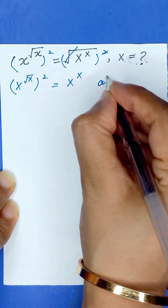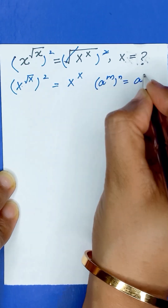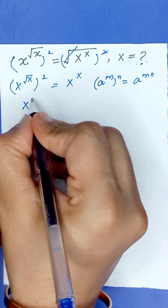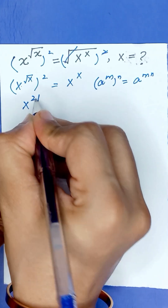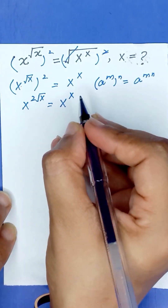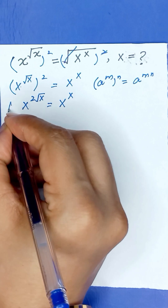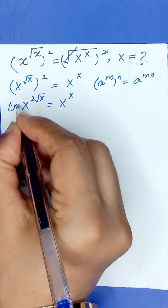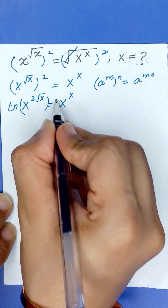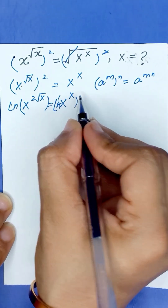As we know that a to the power m, whole raised to the power n, is equal to a to the power mn. So it will become x to the power 2 times square root of x, is equal to x to the power x. Now we will apply natural log on both sides, so it will become ln of x to the power 2 square root of x, equals ln of x to the power x.